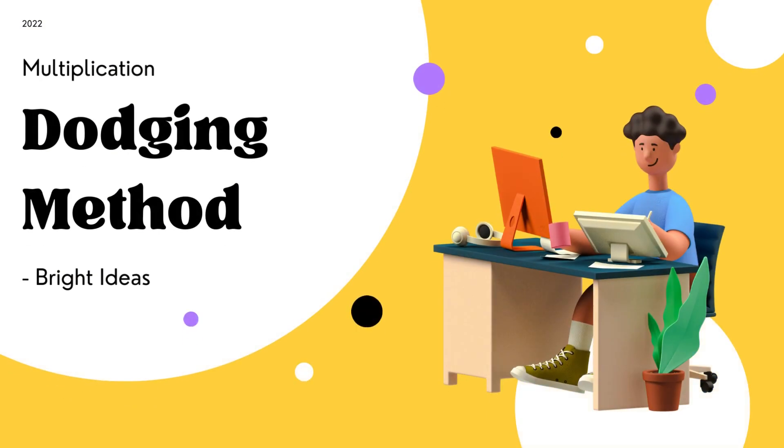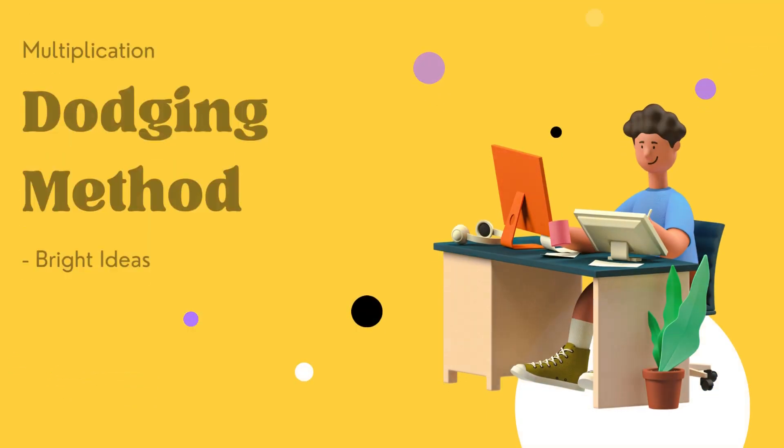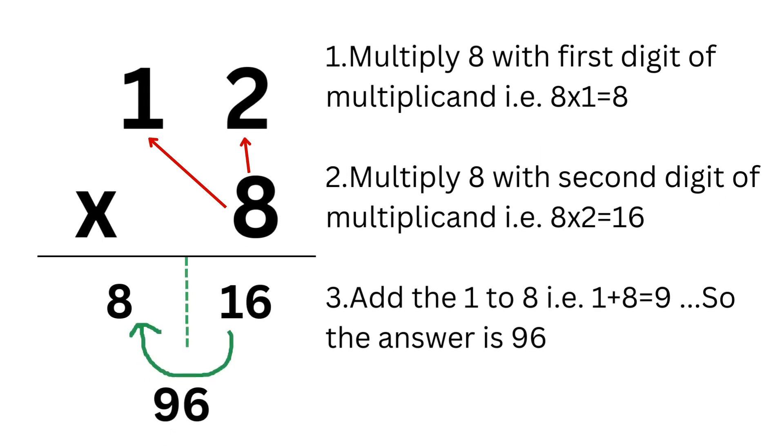Hello everyone, today I am going to teach you all the dodging method in multiplication. Before starting, I want to tell you that this method is only used to find the product of a 2-digit number multiplied with a 1-digit number.